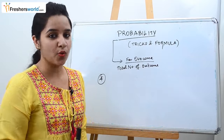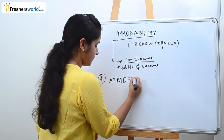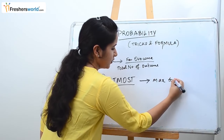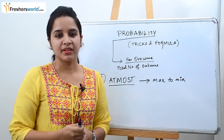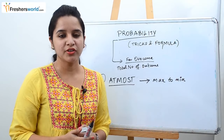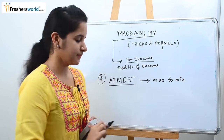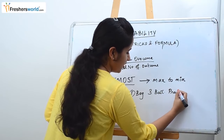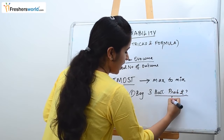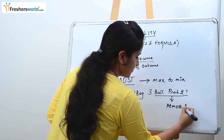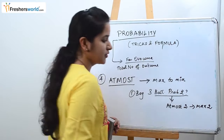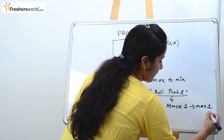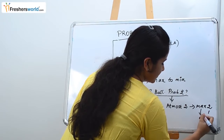The fourth trick is 'utmost'. The word utmost itself shows maximum, so here you go from maximum to minimum. For example, one bag contains three blue balls and utmost you need to take two balls. Utmost two balls means the maximum is two, the middle is one, and the minimum is zero — so you go from maximum to minimum.